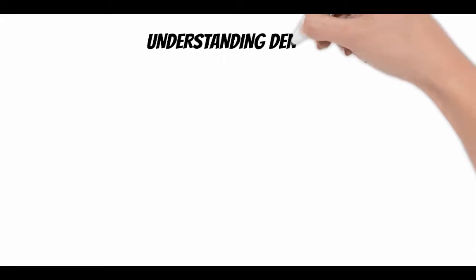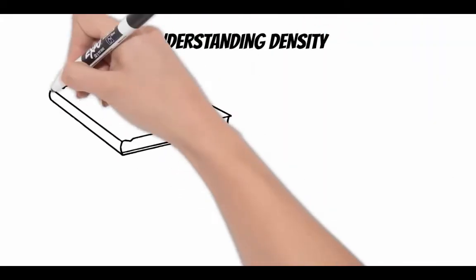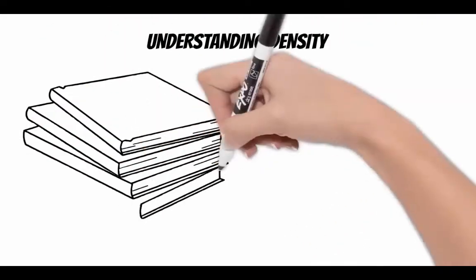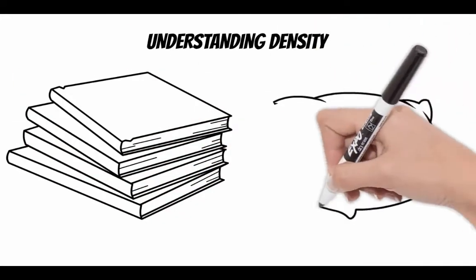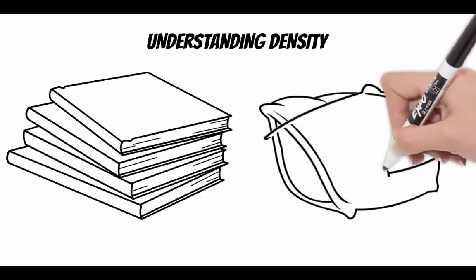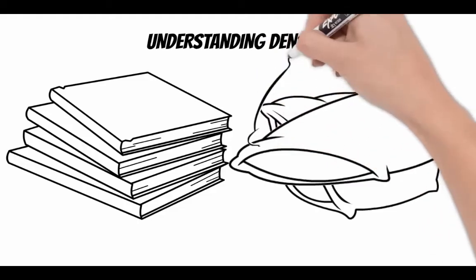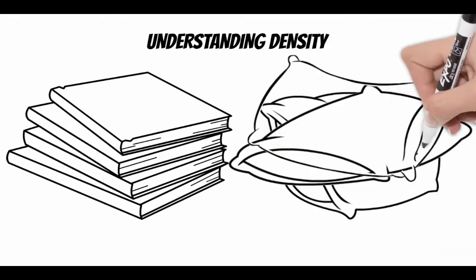Consider the two images below. We have a pile of books and a pile of pillows. The amount of 3D space these two piles are taking up is the same, but would they weigh the same? Do they contain the same amount of mass, or the same number of particles?